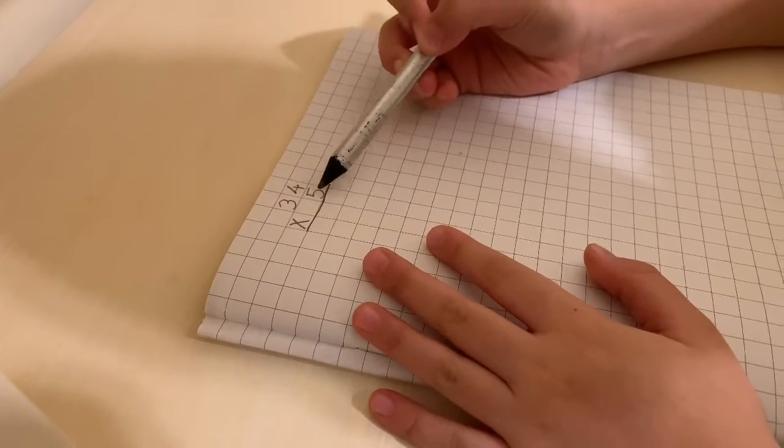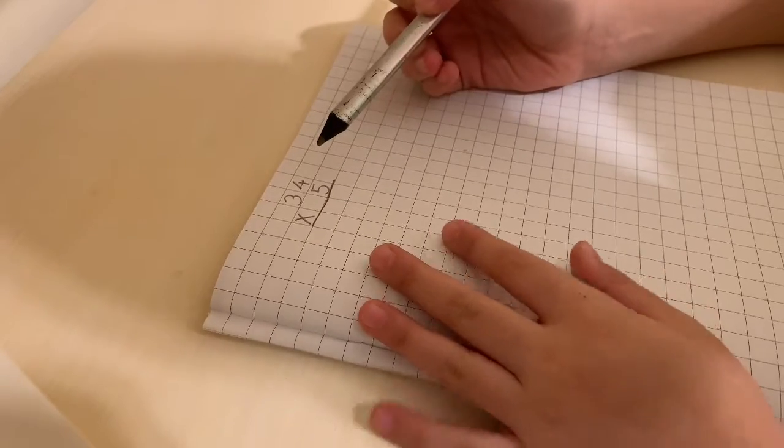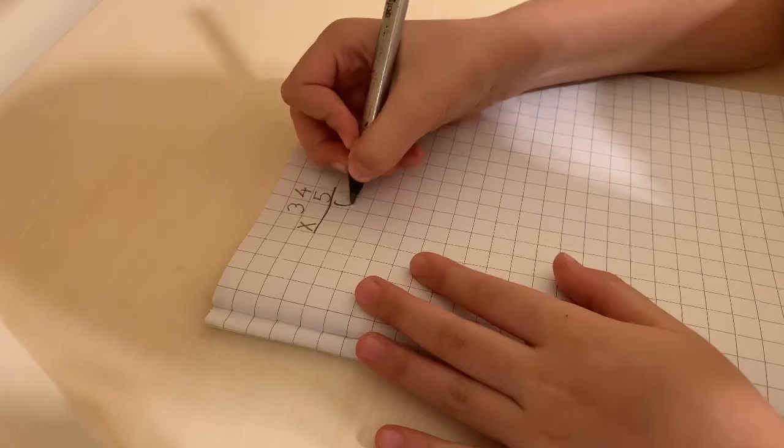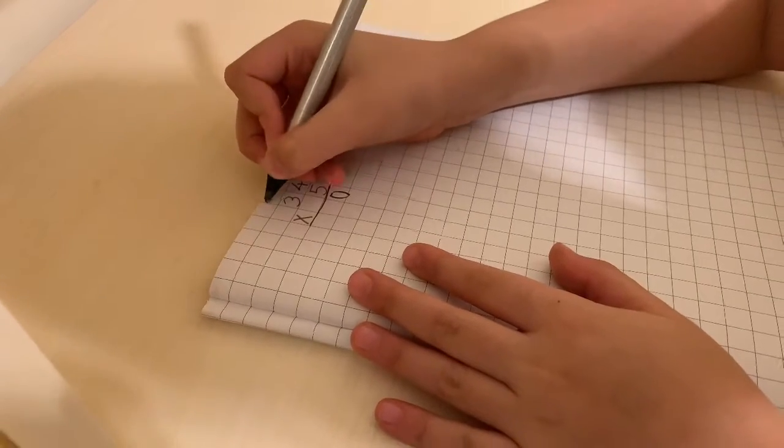So first, you times the 4 by the 5. So we count 5, 10, 15, 20. It's 20. We put the 0 here and then add the 2 to the 3.